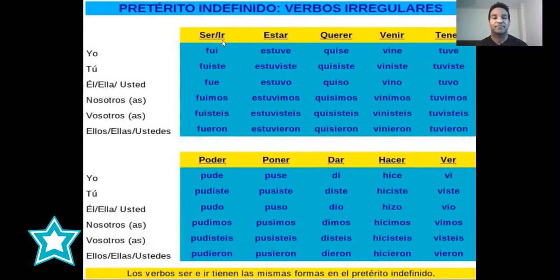Vamos a empezar con los verbos ser e ir. Los verbos ser e ir se conjugan igual en el pretérito indefinido. The verb to be and the verb to go — ir, to go — the conjugation is the same in the past tense. That's why I put it together here. Let's read it. Vamos a leerlo.